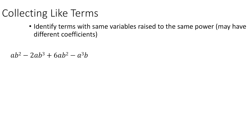Looking at these four terms — ab squared, ab cubed, ab squared, a cubed b — there's only one set of like terms, and that's the ab squared. When we add those together, this is when we pay attention to the coefficients. The first one has no coefficient, so you assume that's a one. The second has a coefficient of positive six. So one plus six gives you seven, and that's how you simplify.